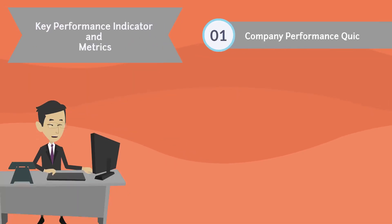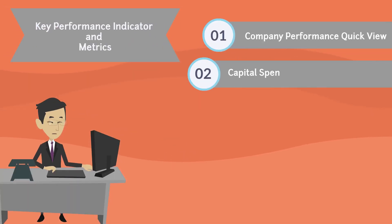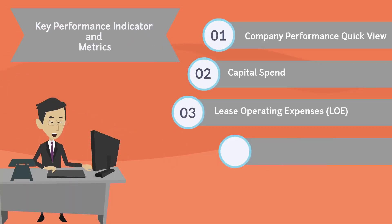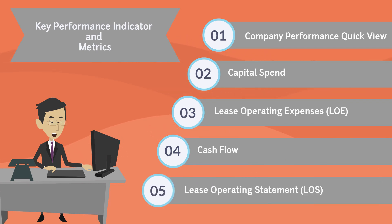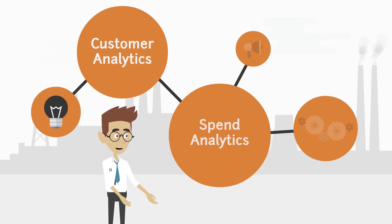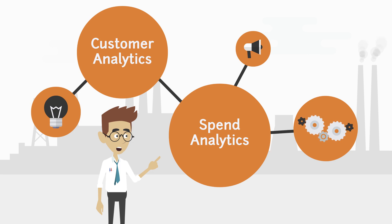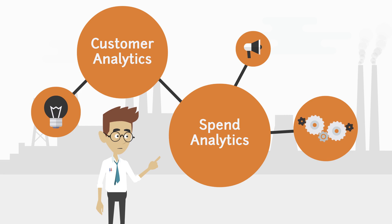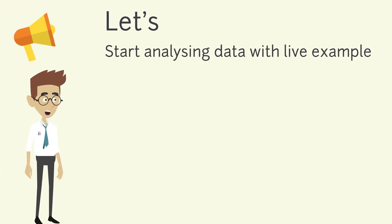Key Performance Indicators and Metrics include Company Performance Quick View, Capital Spend, Lease Operating Expenses, Cash Flow, and Lease Operating Statement. Utilize resources optimally and maintain business profitability by using our Oil and Gas Analytics Solutions — including Customer Analytics and Spend Analytics.